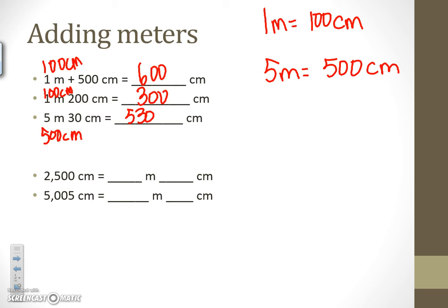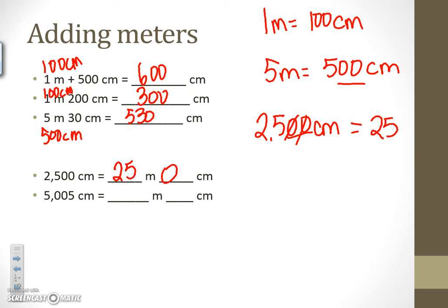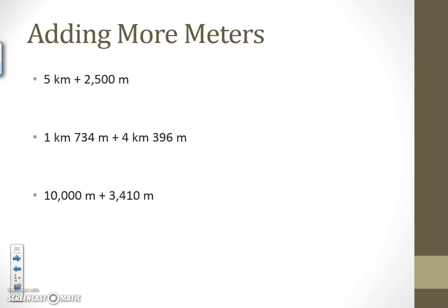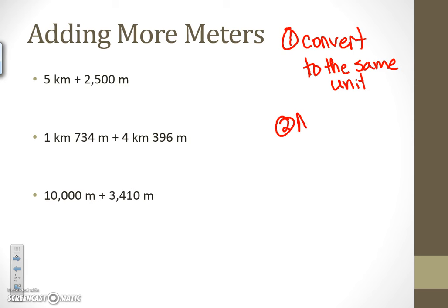Going backwards with centimeters to meters: if I have 2,500 centimeters, I take off the two zeros to convert to meters, giving 25 meters and zero centimeters. Similarly, 5,000 centimeters would be equal to 50 meters with 5 centimeters left. Now go ahead and try adding these yourself — the first thing you'll do is convert to the same unit, converting kilometers to meters, and then add. This one you can add as-is because it's already in meters.